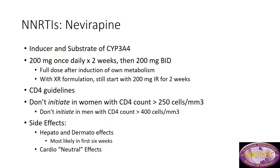The first drug is nevirapine, an inducer and substrate of CYP3A. It has interesting dosing: you start with 200 mg once daily for two weeks, during which the body gets used to the medication and induces its own metabolism. After two weeks, if there are no serious side effects, the dose increases to 200 mg twice daily. There is an XR formulation allowing 400 mg once daily, but you still need the two-week lead-in with 200 mg immediate release. A lead-in package is available with one prescription.